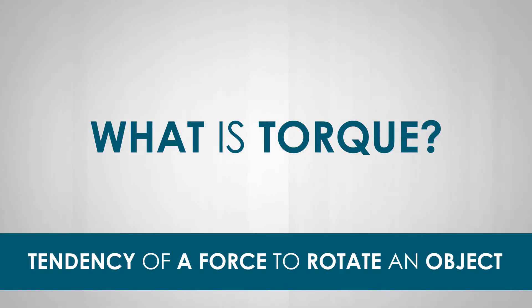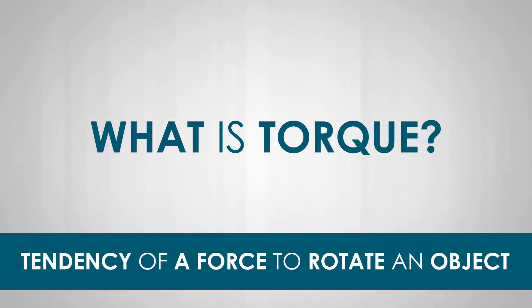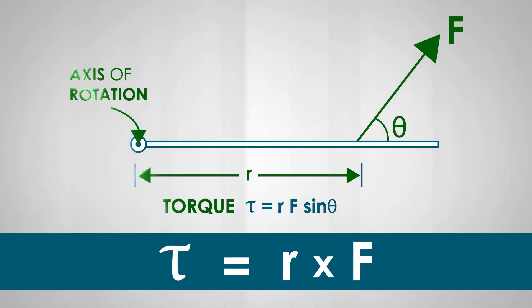What is torque? Torque is the tendency of a force to rotate an object. Torque is a vector and is defined as the vector product of R and F, where F is the applied force and R is the position vector pointing from the axis of rotation to the point of application of the force.